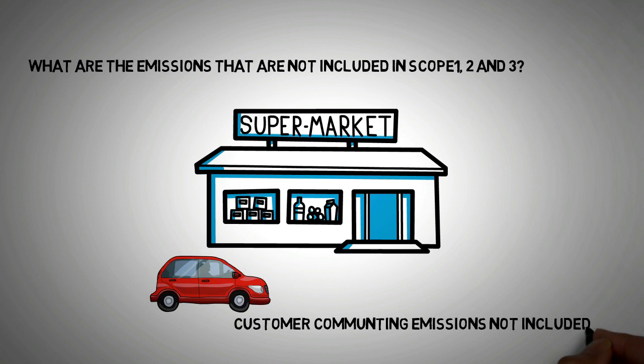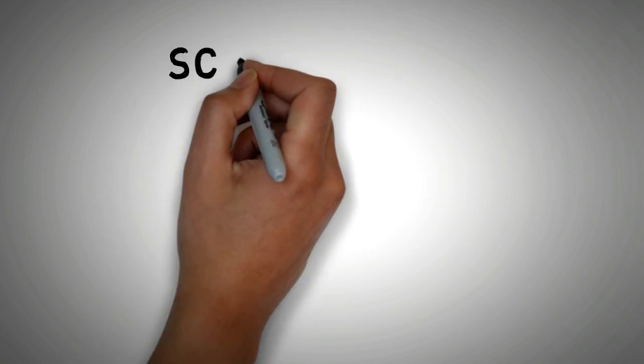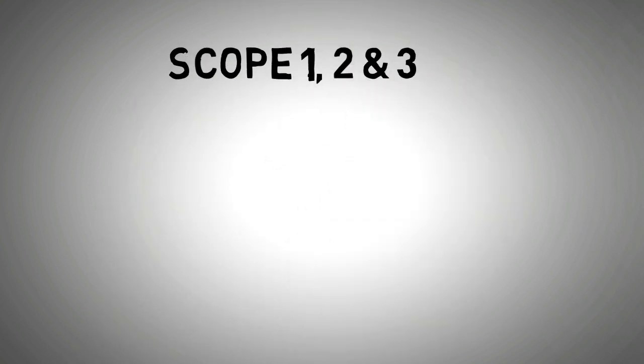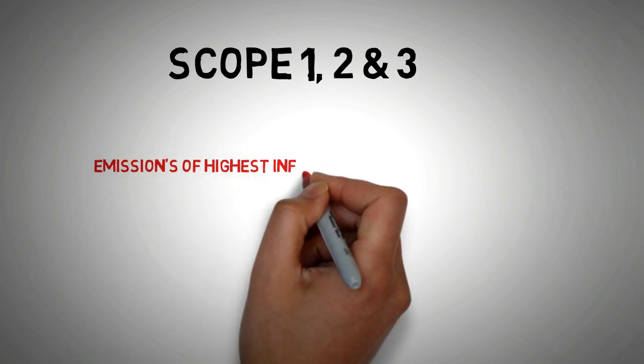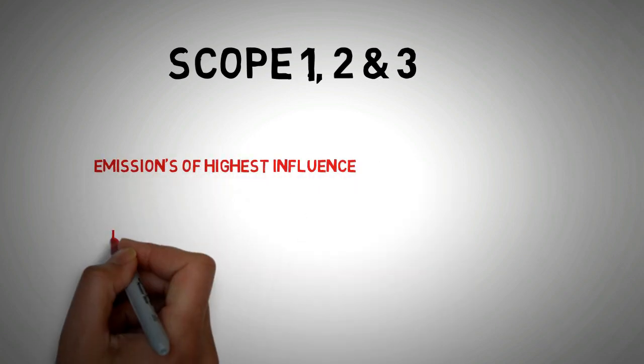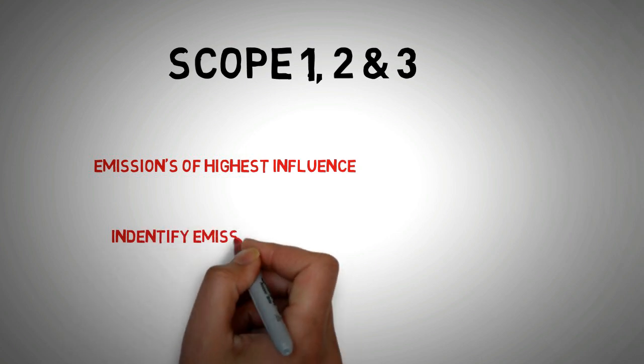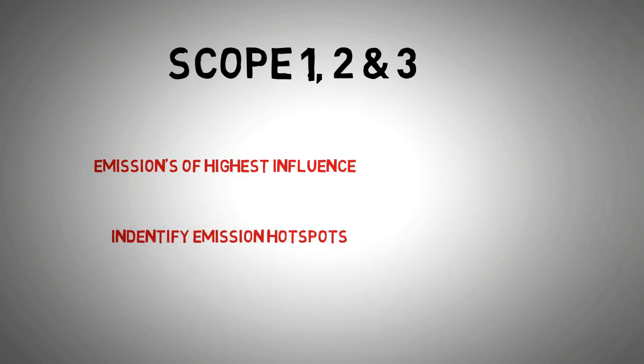What Scope 1, 2 and 3 allow us to do is to identify the emissions which have our highest influence. Namely, all emissions under the Scope 1 and 2. This categorization also allows us to identify emission hotspots. Many of these hotspots may lie in Scope 3, by the way. Once the hotspots are identified, then the organization can focus on reducing them to improve business efficiency.